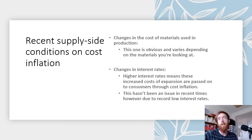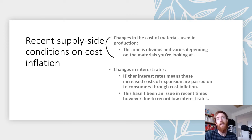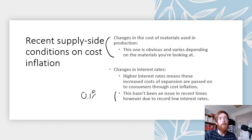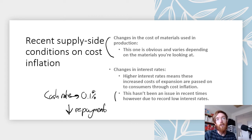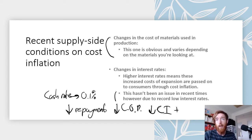Lastly, changes in the cost of materials used in production — we've covered that through oil prices and natural disasters. Then there are changes in interest rates: recently the cash rate is at 0.1%, the lowest in history. That means businesses also have low interest rates, so those with existing business loans have lower repayments, which means cost of production is lower and that leads to eased cost inflationary pressures.